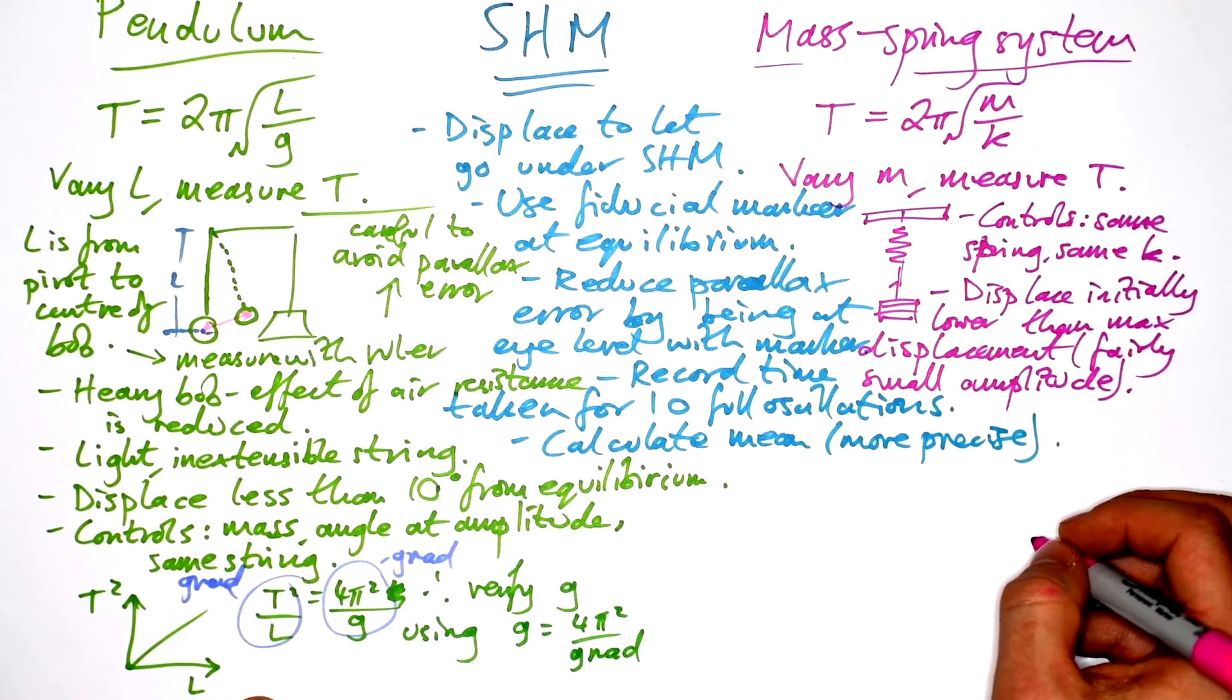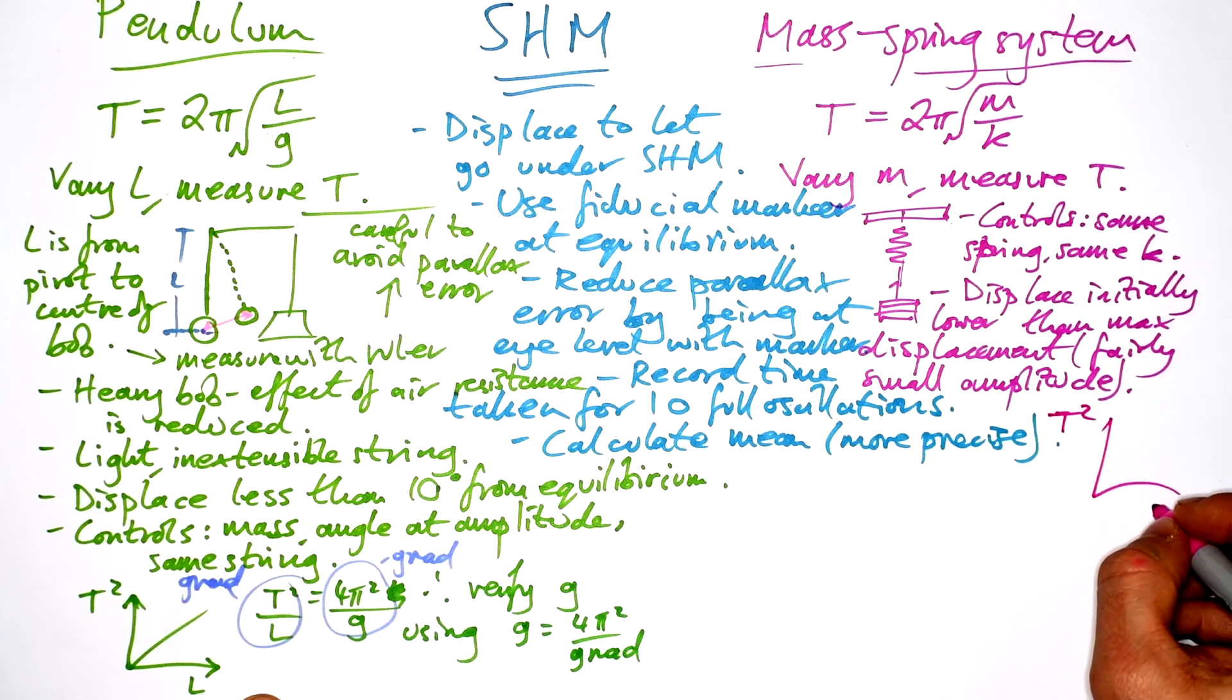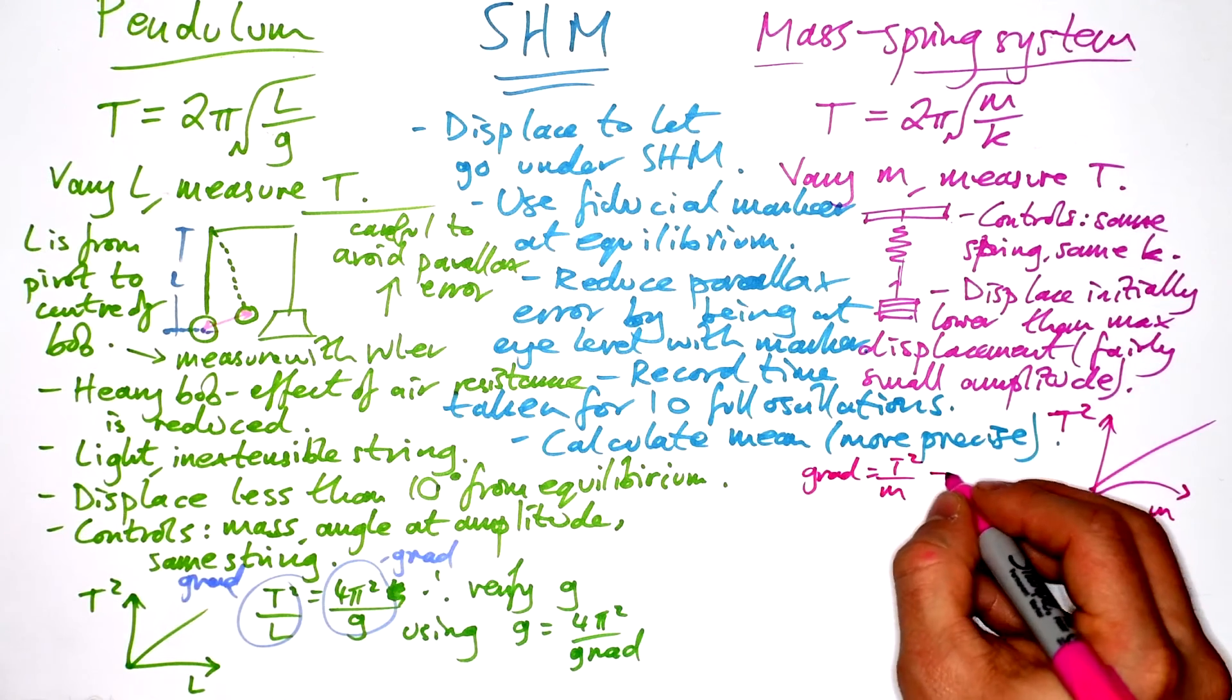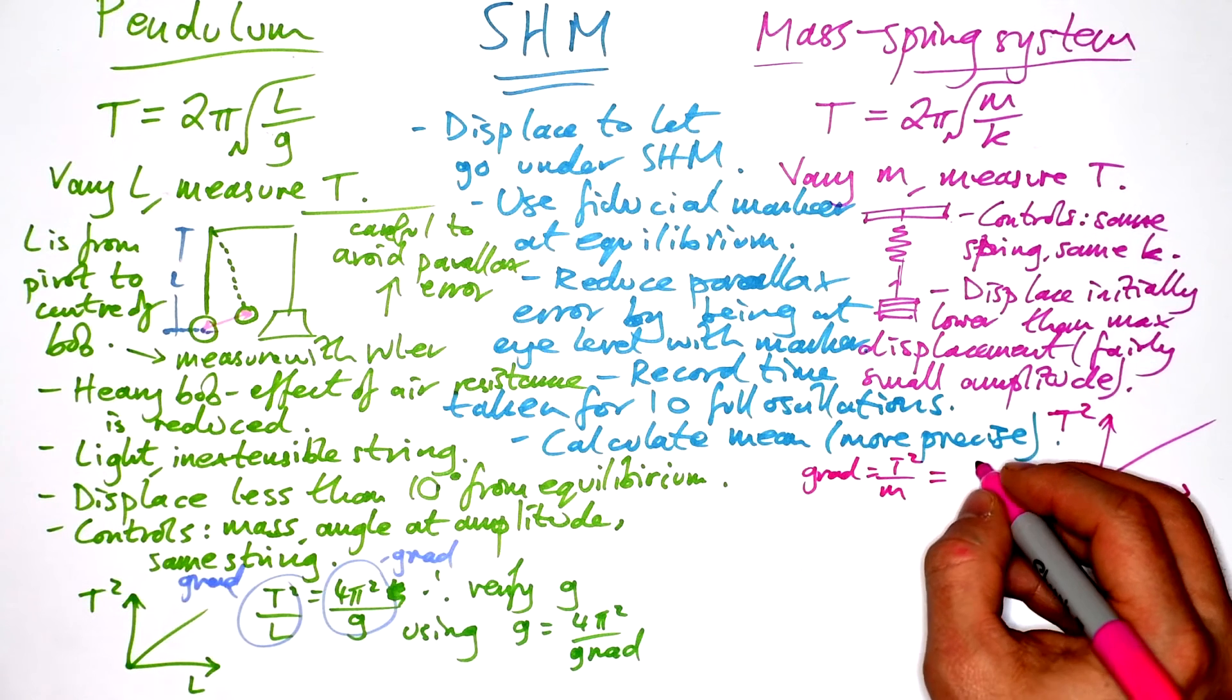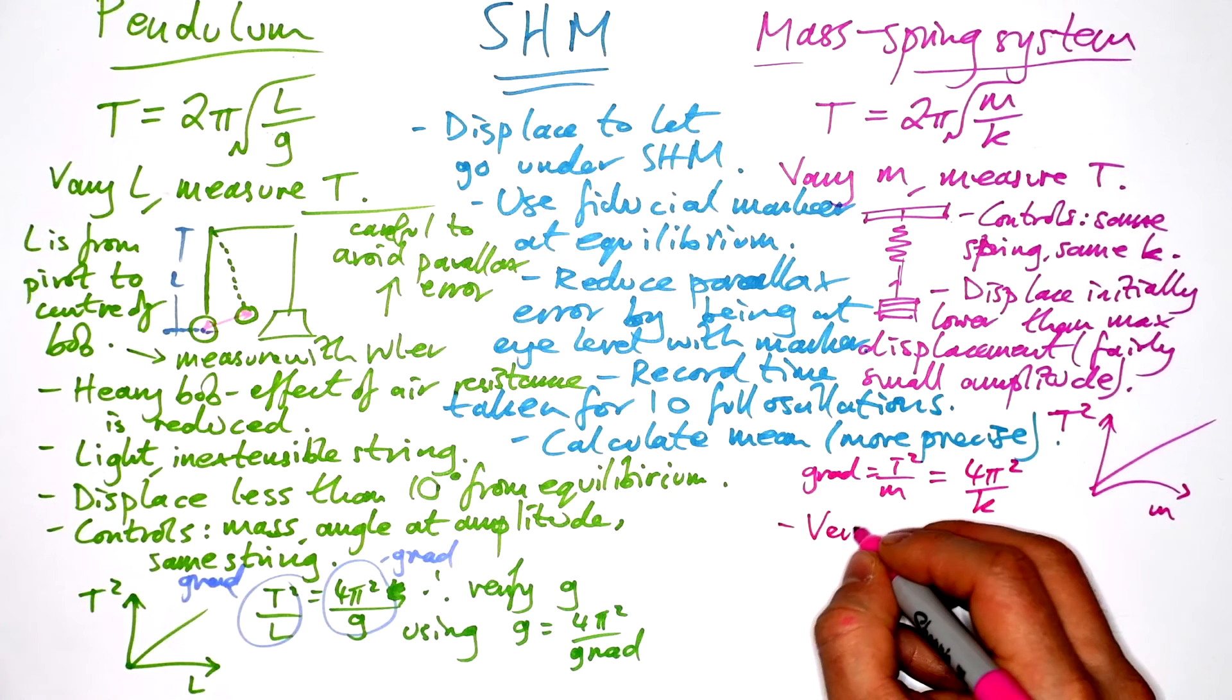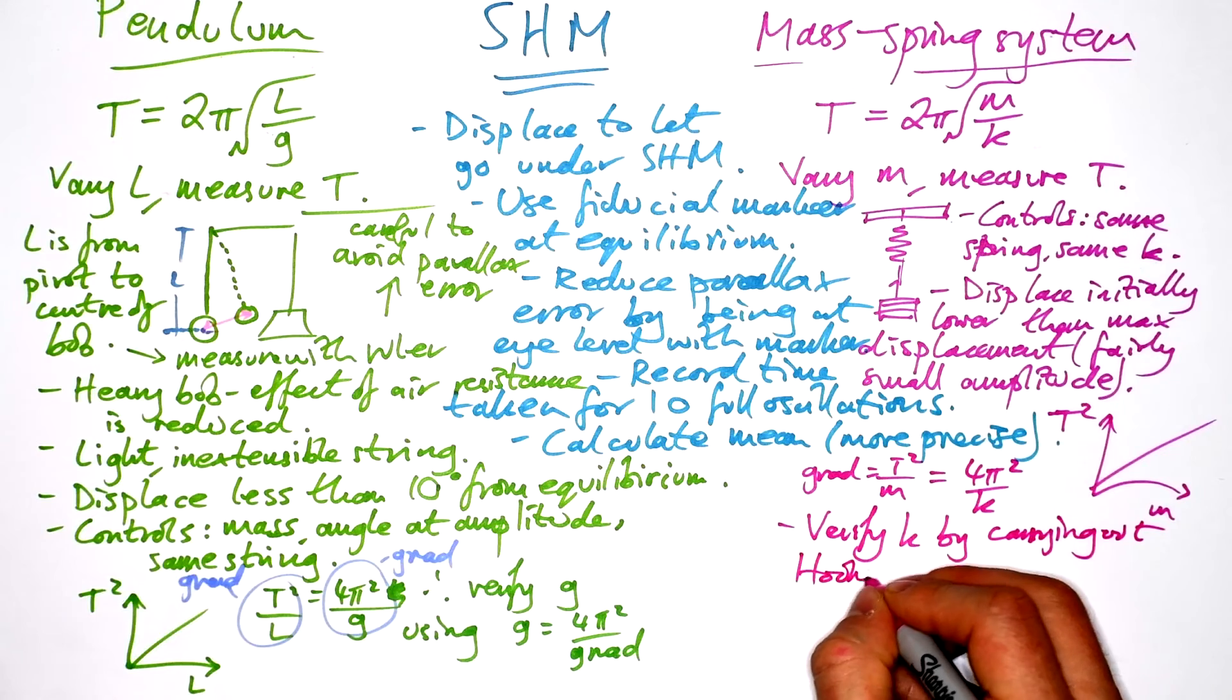Similarly, for the mass spring system, we want a graph of T squared against m. Nice straight line. Gradient is going to be T squared over m. And so again, if we square the equation, then that's going to give us 4π² over k.